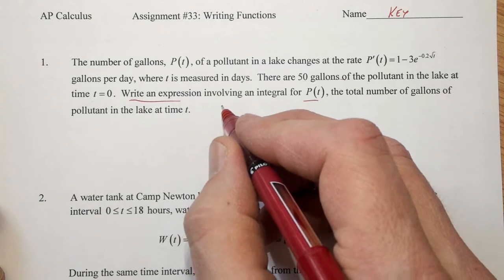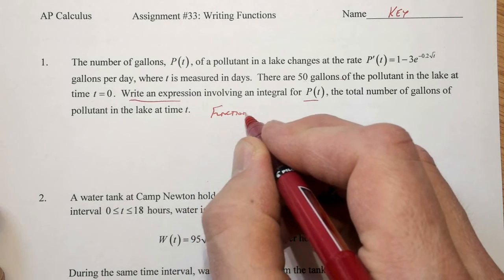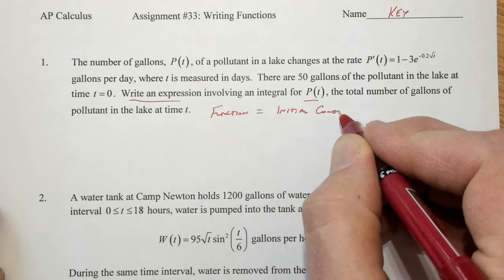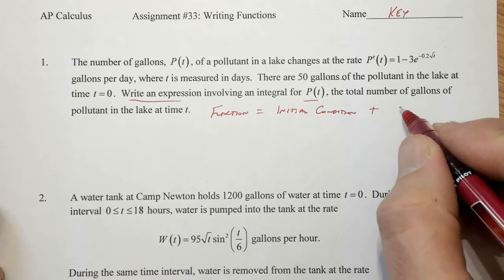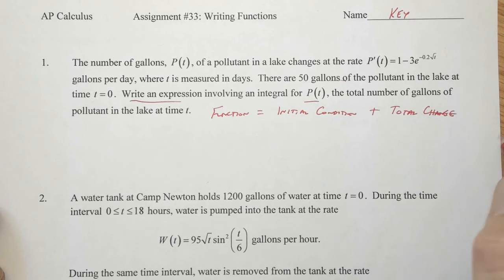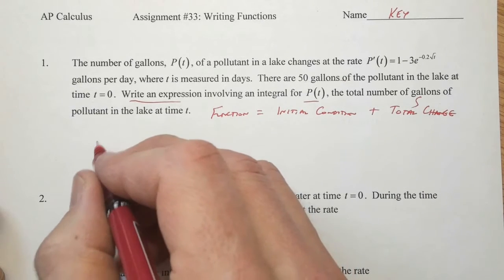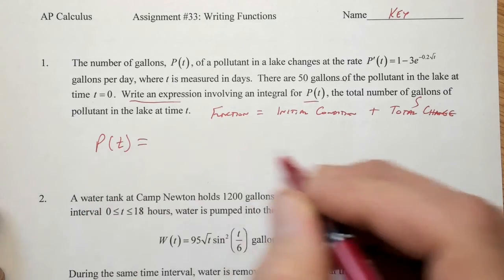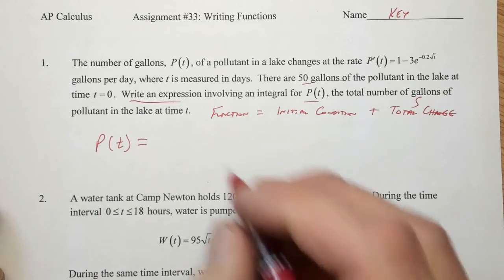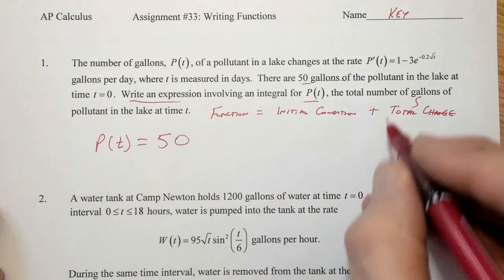So again, the idea is that we have the function in general is equal to the initial condition plus the total change. And the total change part, that's the thing that involves our integral. So here we go. P(t), that's our function, it's equal to the initial condition, there are 50 gallons of pollutant in the lake to begin with. So we have 50 plus, and now our integral.